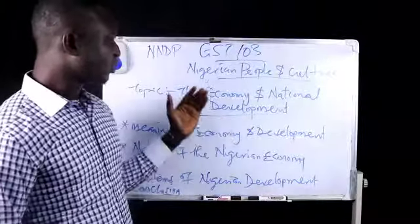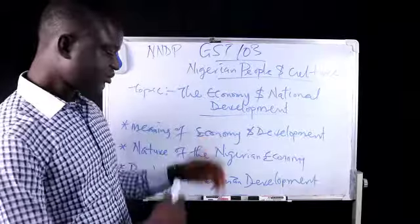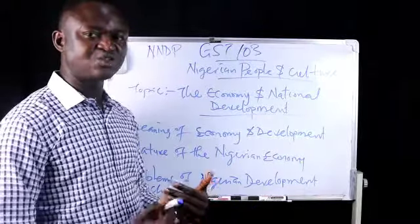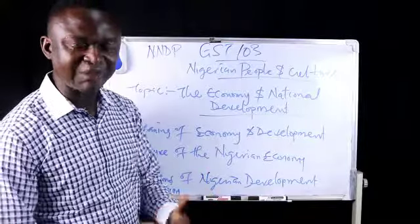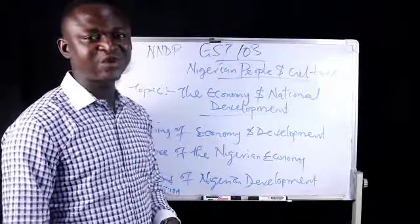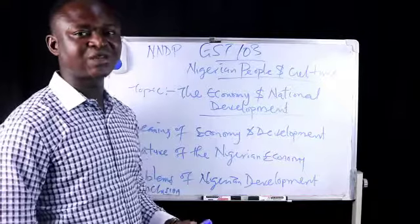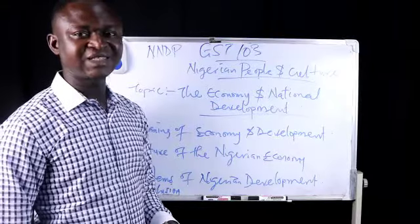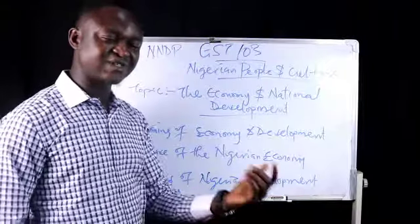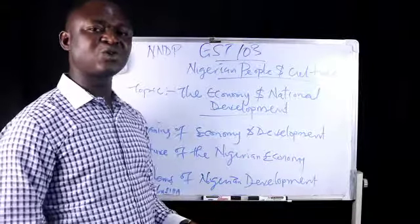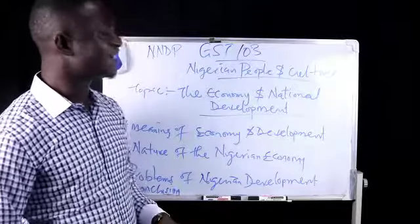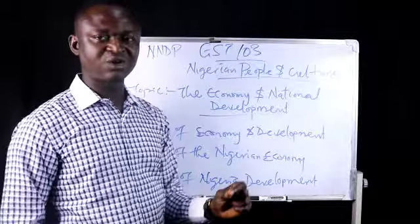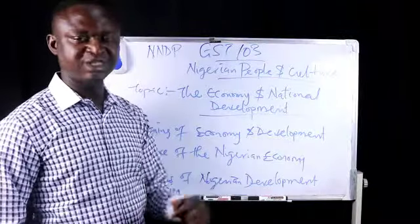Moving forward, we looked at how changes in the constitution brought about Nigeria's independence, because Nigeria actually gained her independence through constitutional amendment. After the Lyttleton constitution came the constitution that ushered Nigeria into independence in 1960. The 1960 constitution, drafted in 1959, gave October 1st of that year as the official date where Nigeria was freed from colonial domination of Britain.